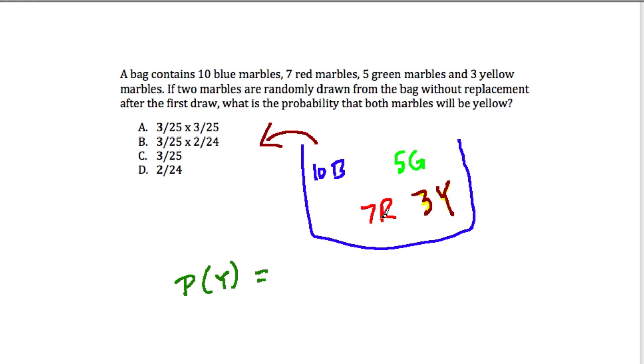It's going to be 3 out of the total, which is what? Well, 7 plus 3 is 10, plus 10 more blue is 20, is 25. So, on the first pick, getting yellow, the chance is 3 out of 25.